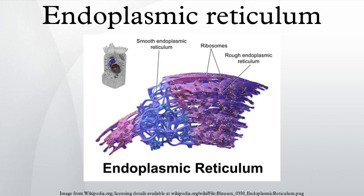The sarcoplasmic reticulum is found in smooth and striated muscle. The only structural difference between this organelle and the smooth endoplasmic reticulum is the medley of proteins bound to their membranes and drifting within their lumens. While the endoplasmic reticulum synthesizes molecules, the sarcoplasmic reticulum stores and pumps calcium ions. It contains large stores of calcium, which it sequesters and then releases when the muscle cell is stimulated, playing a major role in excitation-contraction coupling.